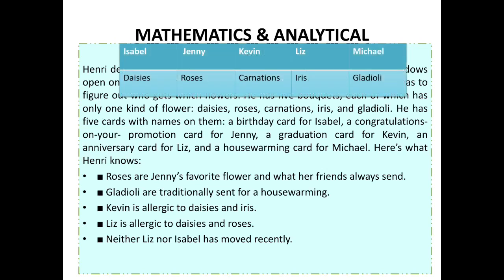Let's make a table. Roses are Jenny's favorite flowers. Gladioli are traditionally sent for housewarming. The housewarming card was for Michael. So gladiolis are being given to Michael. Kevin is allergic to daisies and iris. So Kevin gets carnations. Liz is allergic to daisies and roses, so Liz gets iris. And Isabel is left with daisies. Keep this table in front of you whenever you are solving the question and you will see that it becomes extremely easy.